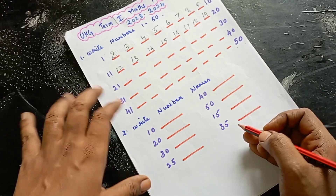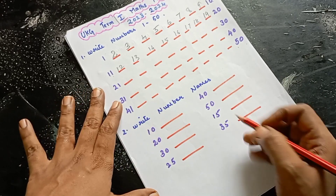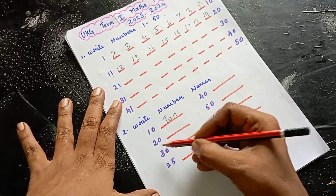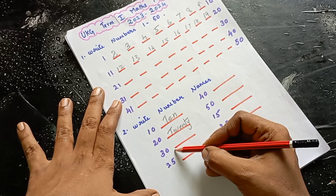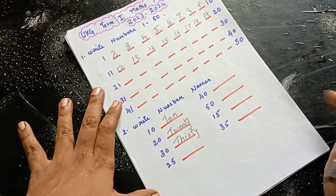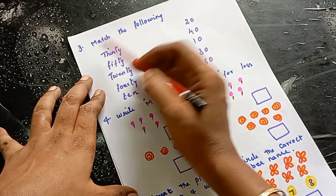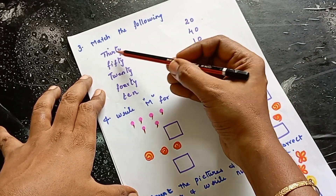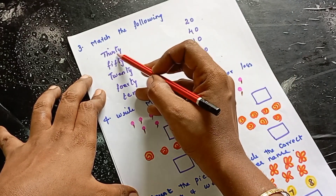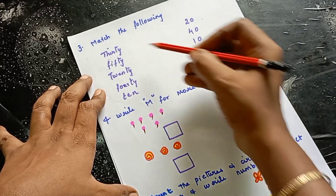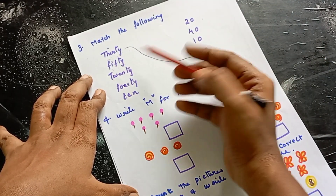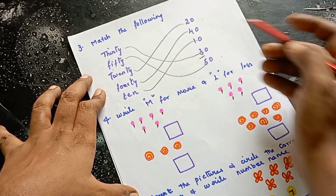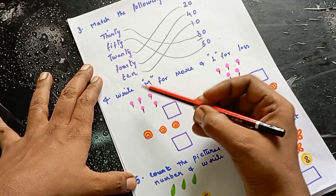Question number 2 is: write number names. Here we are going to write the number names. Question number 3 is: match the following. Here we are going to match words to numbers.